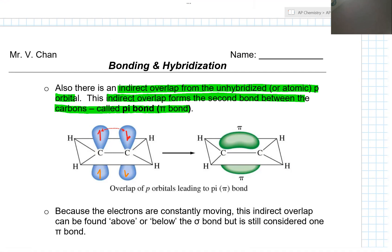The electrons could be both on top, or the overlap could be when the electrons are both on the bottom — it's one or the other. This indirect overlap is what we call our pi bond, and this results in our second bond between the two carbons. Because the electrons are constantly moving, this indirect overlap can be found above or below, but is still considered one pi bond.